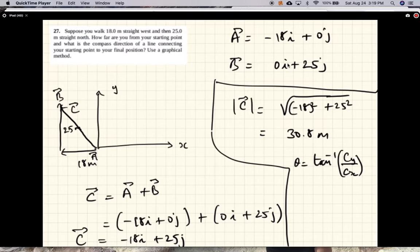And so this equals tan inverse of CY, which is 25, over CX, which is minus 18.